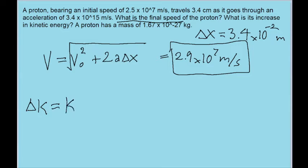Which I will write as k final, k sub f, minus k initial, k sub i. The formula for the kinetic energy of an object is 1 half times its mass times the square of its speed. So in this case, we're taking this formula for the final speed and subtracting the formula for the initial speed.